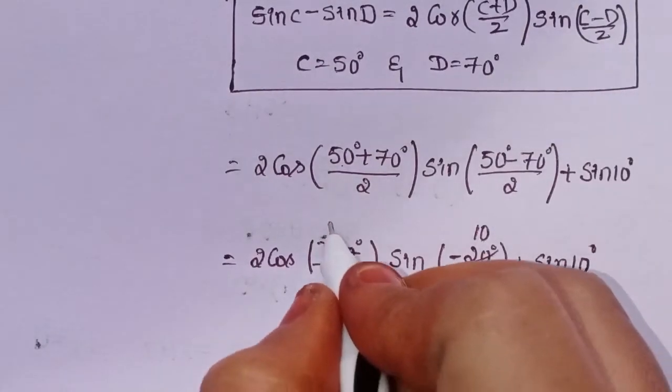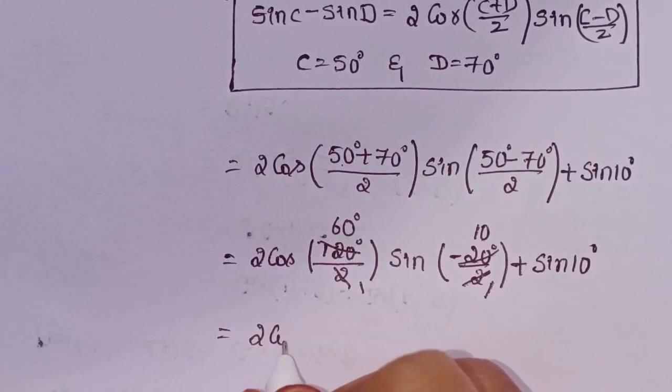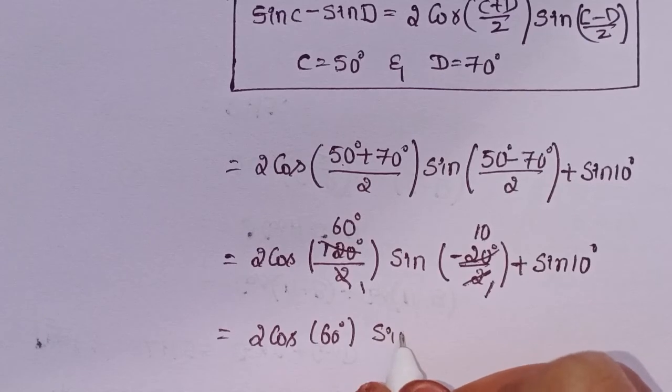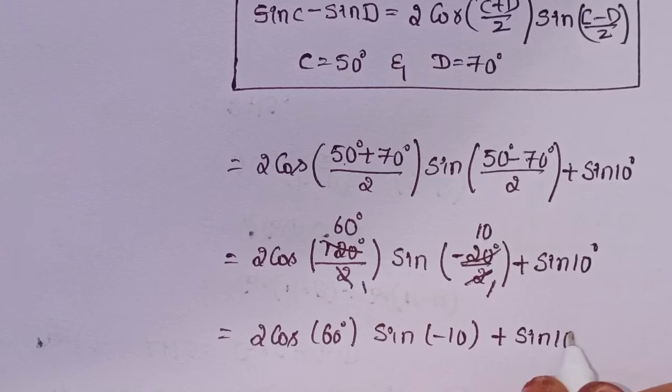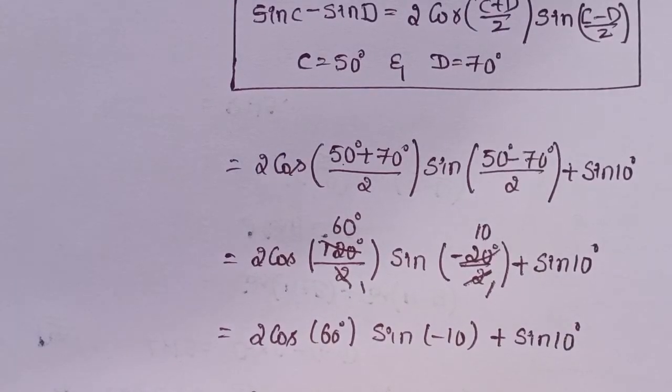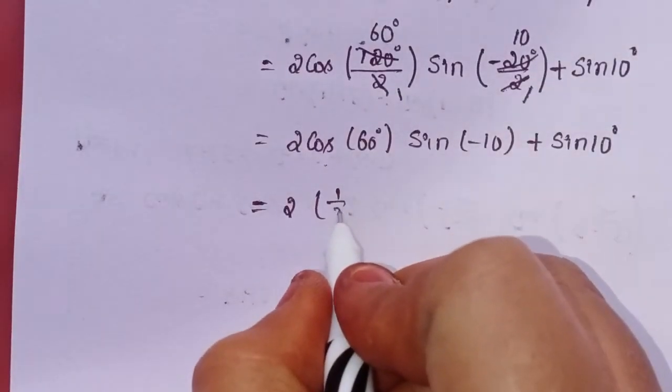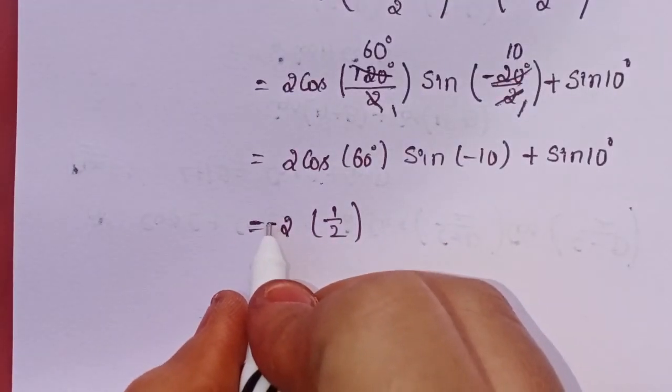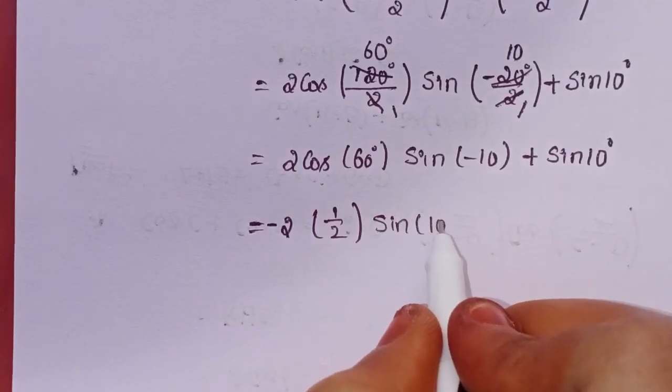50 plus 70 is 120, divided by 2 is 60. So 2 times cos of 60 degrees into sin of minus 10 degrees plus sin 10 degrees.